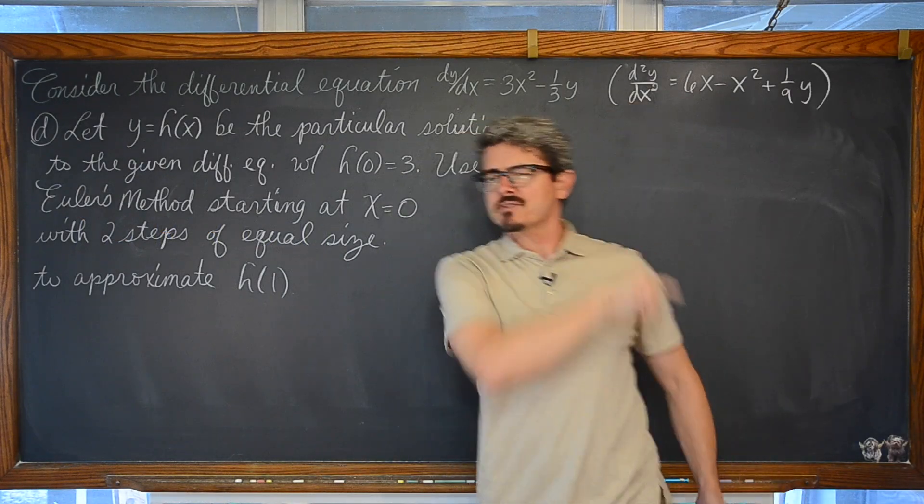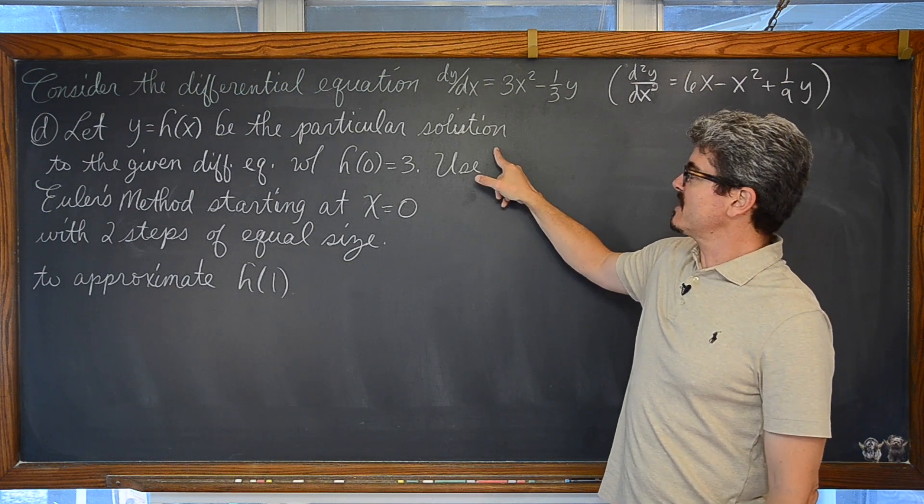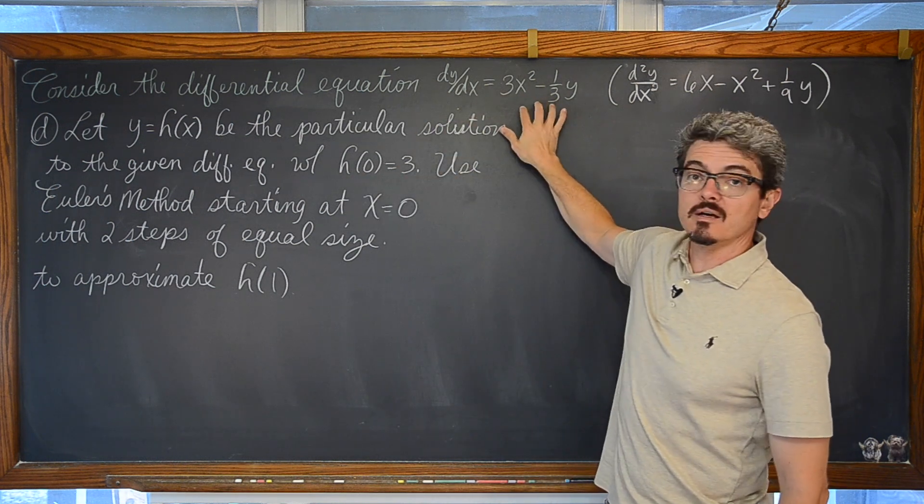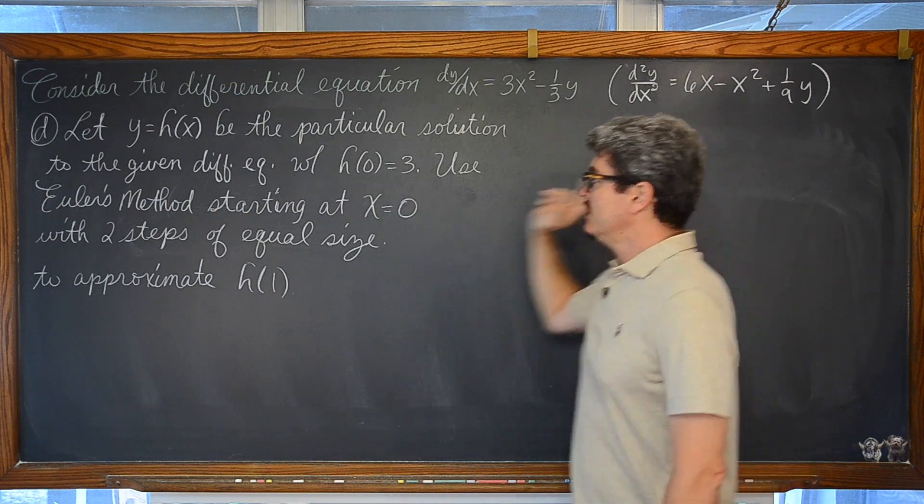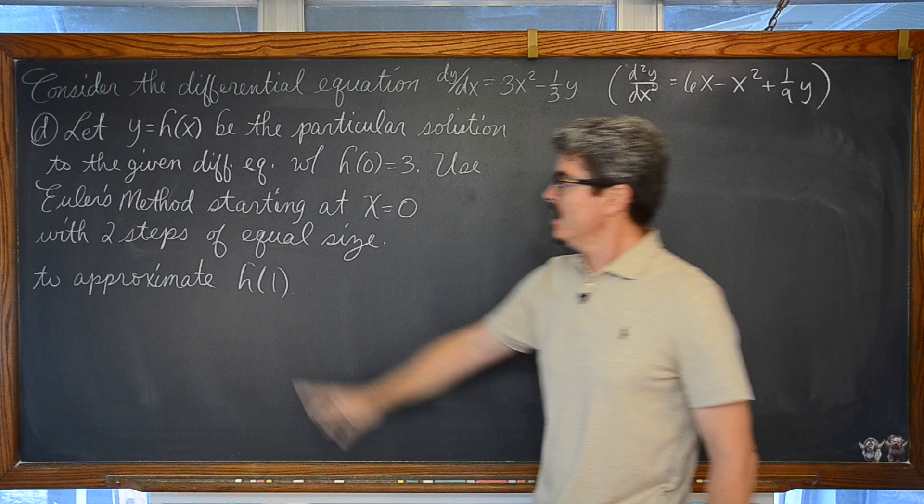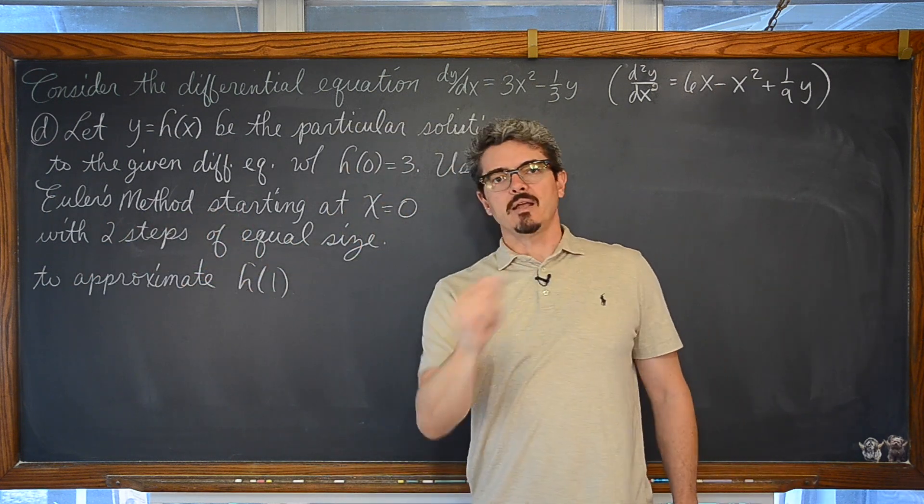It's the last part! We are going to let y = h(x) be the particular solution to the given differential equation with h(0) = 3. Use Euler's method starting at x = 0 with two steps of equal size to approximate h(1).